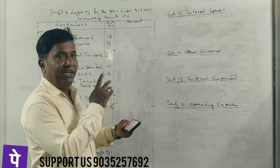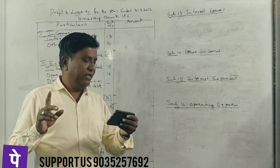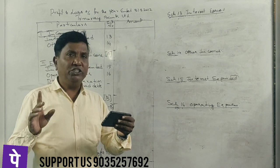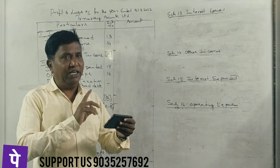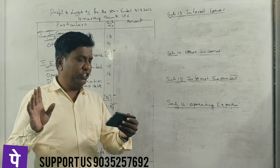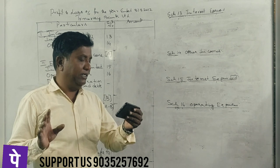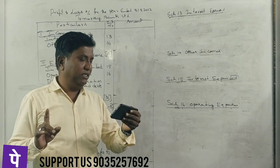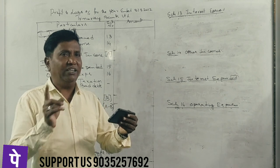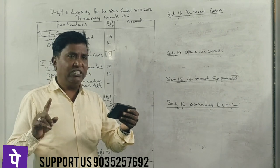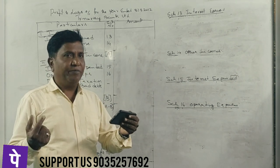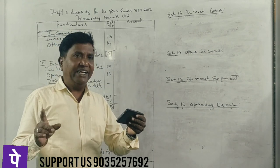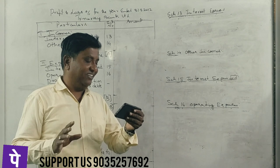Interest on fixed deposit, $50,000. Interest on loans, $30,000. Commission charged to customer, $40,000. Establishment expenses, $60,000. Discount on bills discounted, $30,000. Interest on cash credit, $30,000. Interest on current account, $15,000. Rent and taxes, $16,000.